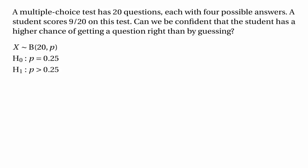The alternative hypothesis in this case would be that p is greater than 0.25, because if the student can do better than just by guessing then the probability of getting a question right must be more than a quarter.